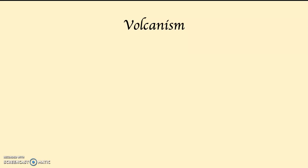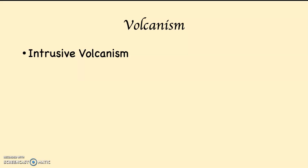Any time magma wells up into the crustal zone — hot liquid rock in the crustal zone — that is known as volcanism. Volcanism comes in two types. The first type is intrusive volcanism. Like the name implies, intrusive volcanism means that the liquid rock, the magma, is still inside the planet. Liquid rock inside the planet is known as magma. If that magma cools and solidifies, it creates what are known as plutons.